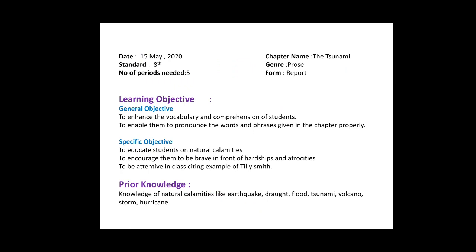The form of chapter is a report. The general learning objective is to enhance the vocabulary and comprehension of students, and to enable them to pronounce the words and phrases given in the chapter properly. The specific objectives are: to educate students on natural calamities since the chapter is based on one, to encourage them to be brave in front of hardship and atrocities, and to be attentive in class — citing the example of Tillie Smith, one character given in the chapter.